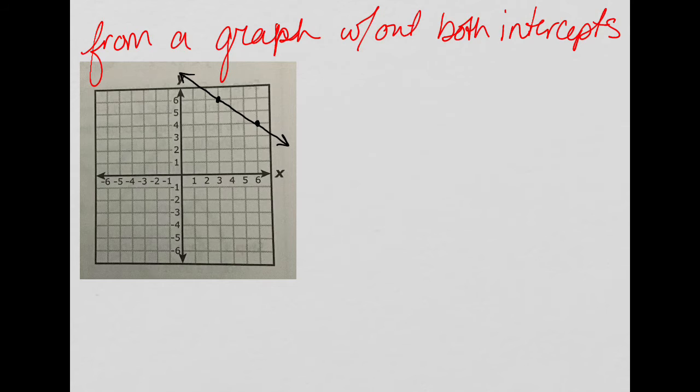Here's another graph, but what you notice is they do not give you the intercepts, either of them. So I still have to eventually find both the slope and the y-intercept, my m and b value.